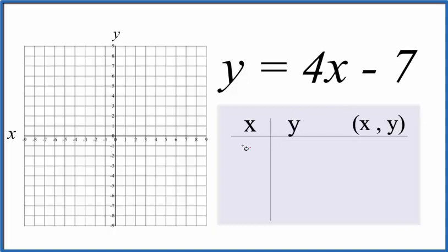I like to start with 0 because 4 times 0, that's 0. 0 minus 7, that's negative 7. How about 1? 4 times 1 is 4. 4 minus 7, that's negative 3. And let's do 2. 4 times 2 is 8. 8 minus 7, that's 1.